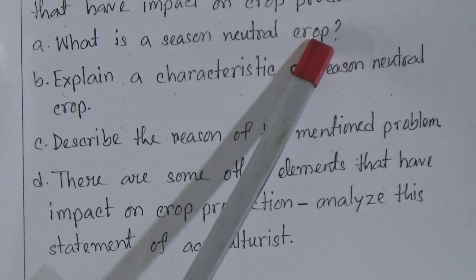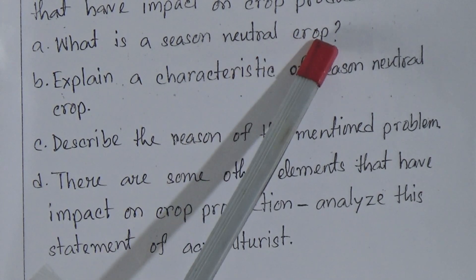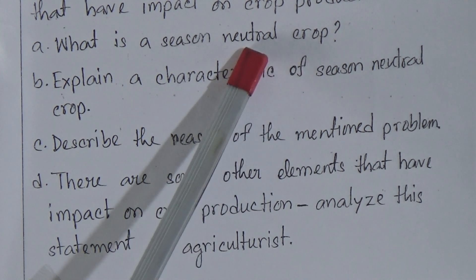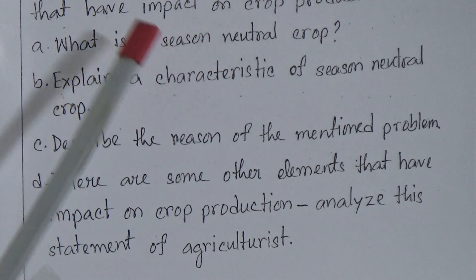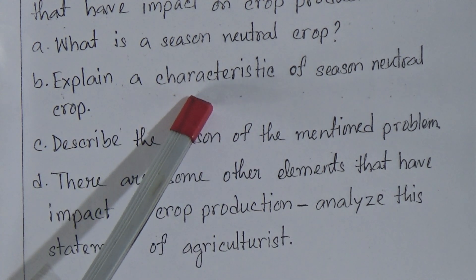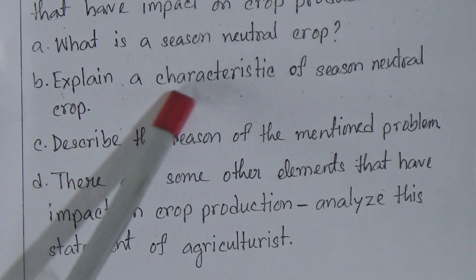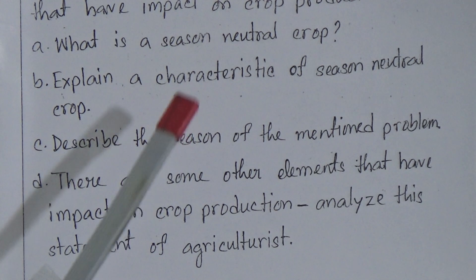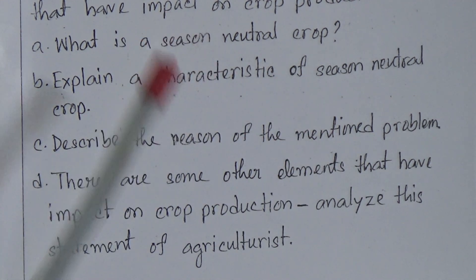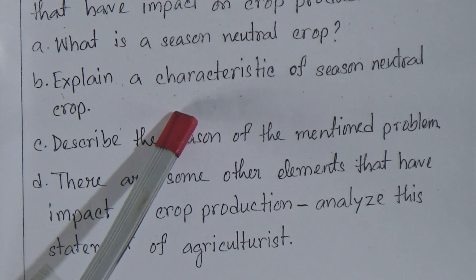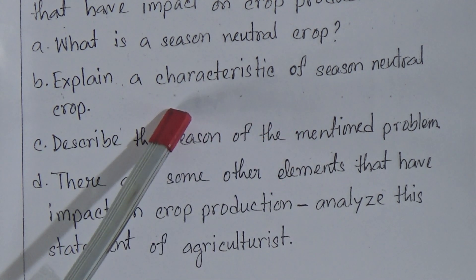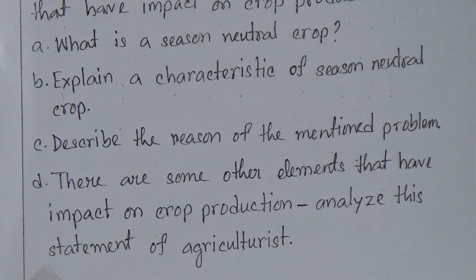Question number A: What is a season neutral crop? This question carries one mark. You will try to give the answer within one sentence and you will find the answer in your textbook. For questions A and B, you need to go through your textbook, memorize some information, and understand the text properly. Question number B: Explain a characteristic of season neutral crop. The main characteristic is that they can be grown in both the winter season and the rainy season — there are two seasons for growing crops.